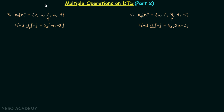In the last lecture, which was part 1 of multiple operations on discrete time signals, we solved two examples. In part 2 we will solve two more examples.